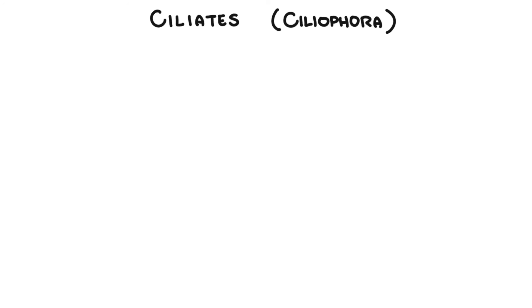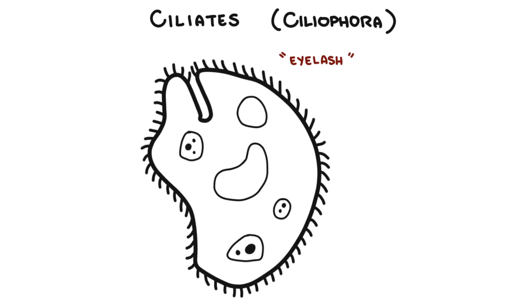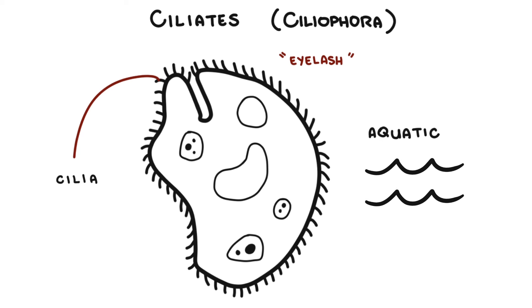The third group of protozoan parasites are the ciliates, the ciliophora. They derive their name from the Latin word for eyelash, which describes the appearance of many ciliates quite well. Some or all of the surface of the ciliate is covered with relatively short, dense, hair-like structures — the cilia — which beat to propel the ciliate through the water and to draw in food particles. They are aquatic and abundant in almost every environment with liquid water: the ocean, marine sediments, lakes, ponds, and rivers.